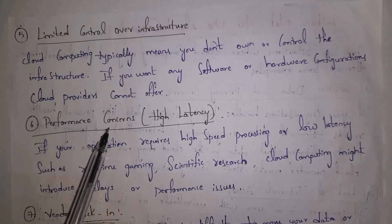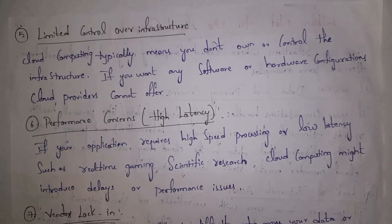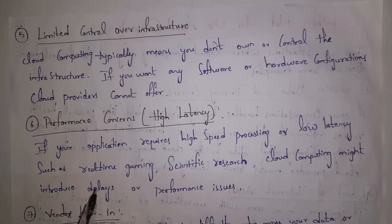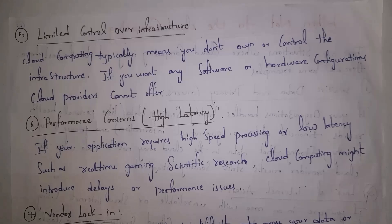The sixth one is performance concerns and high latency. If your application needs high-speed processing — that is, if your application needs to work very fast — placing such applications in the cloud may cause performance issues. For example, gaming applications and scientific research applications placed in the cloud may not work well because they need to run very fast.